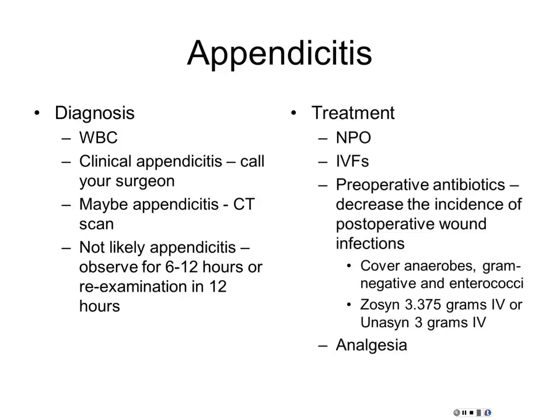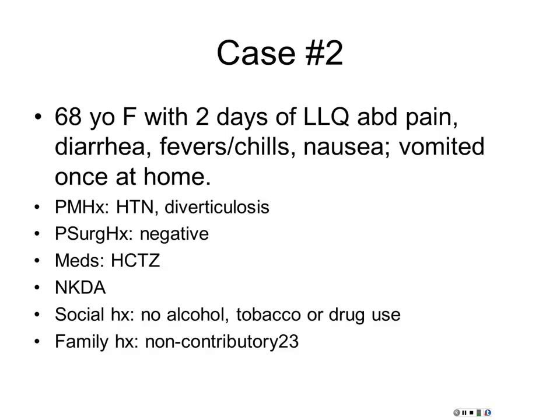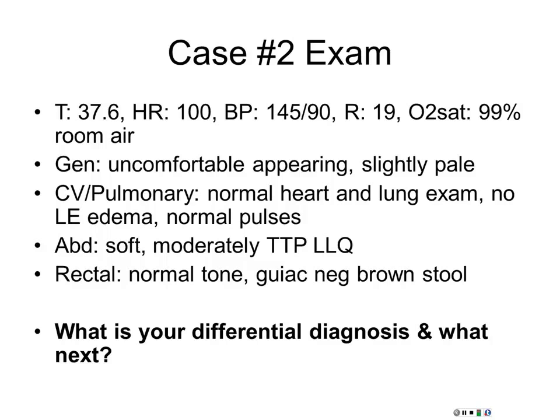Case number two: 68-year-old lady with two days of left lower quadrant abdominal pain, diarrhea, fevers, chills, nausea, vomited once at home. Relatively healthy with a history of diverticulosis, on hydrochlorothiazide. She's borderline tachycardic, afebrile on exam, mildly tender on palpation in the lower quadrant, guaiac-negative stool. Differential diagnosis — almost always diverticulitis. But the red herring is diverticulitis that turns out to be a ruptured viscus.